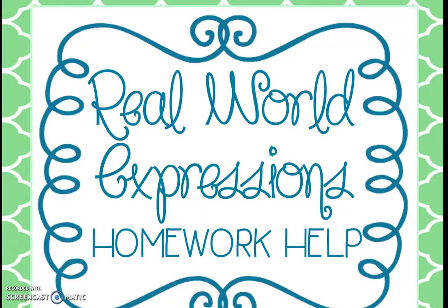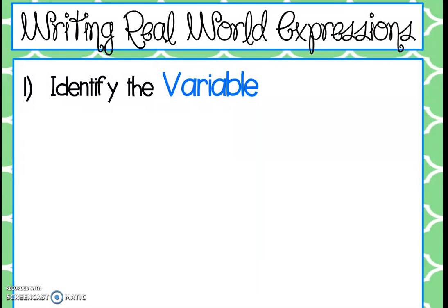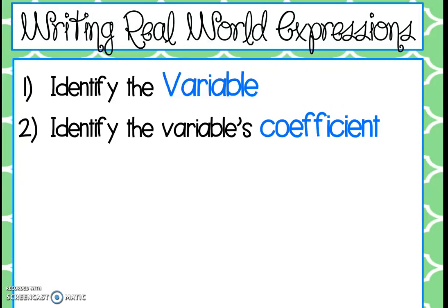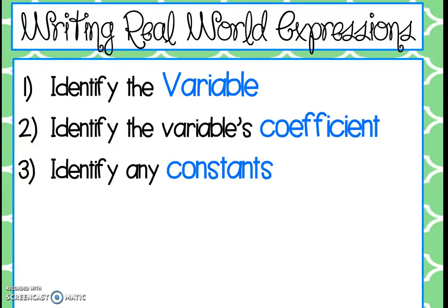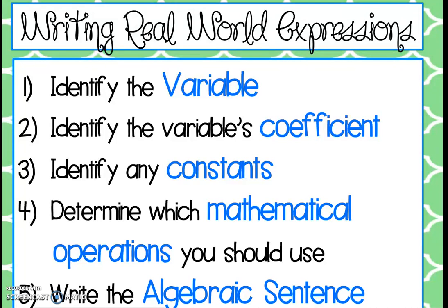Today we worked on writing real-world expressions. The steps we talked about are: number one, identify the variable — pick out what we don't know. Then identify if the variable has a coefficient — is there anything being multiplied by that variable? Next, pick out any constants, anything being added or subtracted. Then determine which mathematical operation to use, and finally put it all together in an algebraic expression.